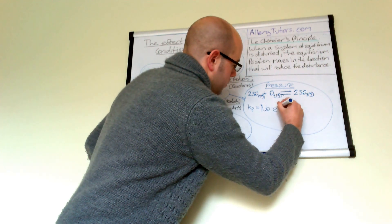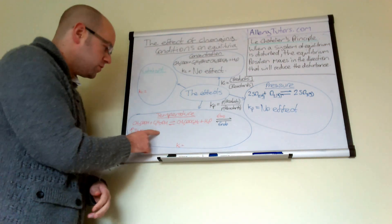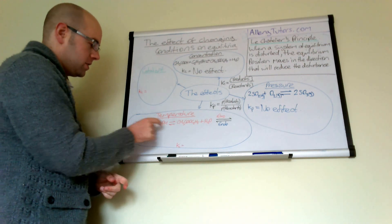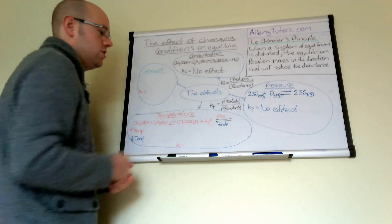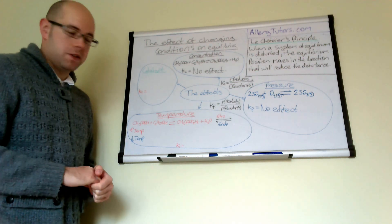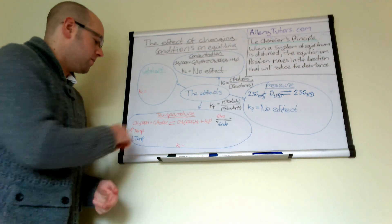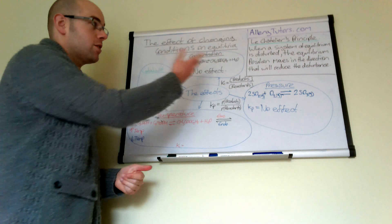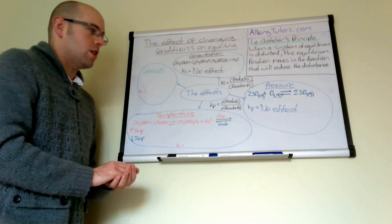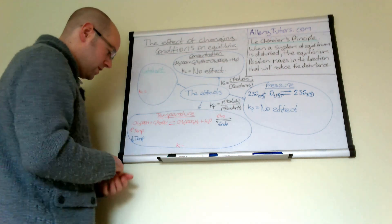Temperature is a bit trickier. We have a reaction again with a carboxylic acid and alcohol forming an ester — the same reaction as before. The forward reaction is exothermic, which we can find out through practical work, and therefore the reverse reaction must be endothermic. If we increase the temperature, according to Le Chatelier's principle the system will try to oppose that change and shift in the endothermic direction to decrease the temperature.